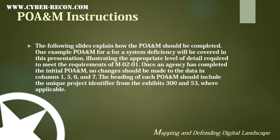The following slides explain how the POAM should be completed. One example of a POAM finding for a system deficiency will be covered in the presentation, illustrating the appropriate level of detail required to meet the requirements of M-02-01. Once the agency has completed the initial POAM, no changes should be made in columns 1, 5, 6, and 7. You'll also note that column 4 should not be changed after filling that out as well. The heading of each POAM should include the unique project identifier from Exhibits 353 where applicable.